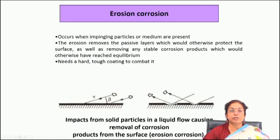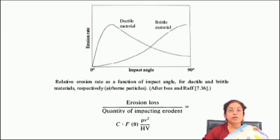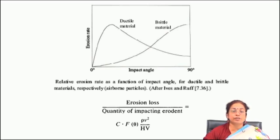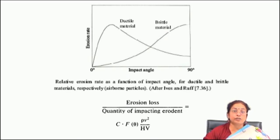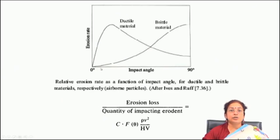To combat erosion corrosion you have to develop a protective hard coating on the surface, which reduces the tendency for erosion corrosion to a large extent. Erosion corrosion is dependent not only on surface hardness and microstructure, but also on the impingement angle. For ductile materials, the erosion rate is maximum at an angle of about 30 degrees, because the cutting mechanism plays an important role. On the other hand, for brittle materials the erosion rate is maximum at an angle of 90 degrees, because brittle materials are very hard and break down due to the applied force at normal impact.